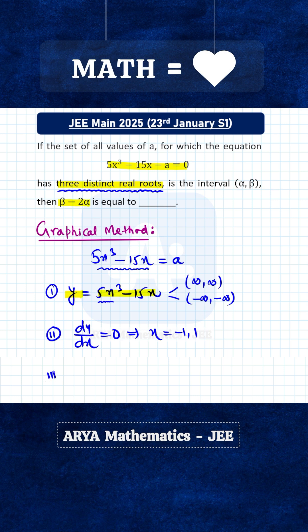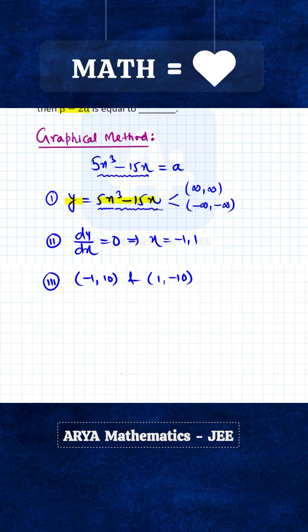Now the third step is: find the value of the function at these two turning points. So now we are in a position to plot the graph of this cubic polynomial.